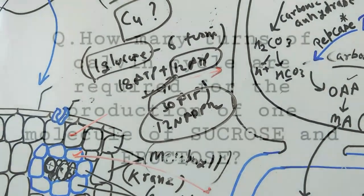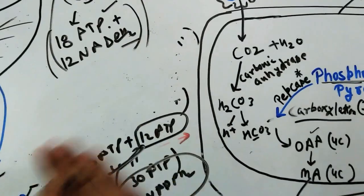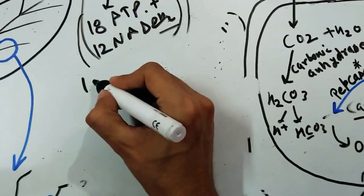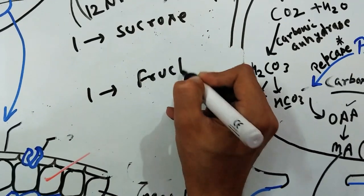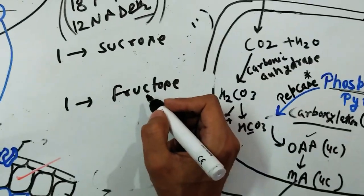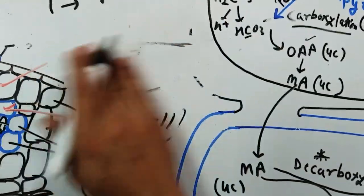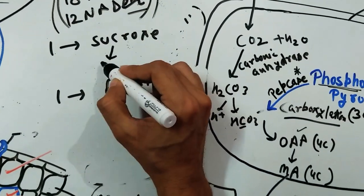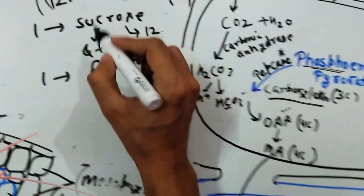The second question asks: how many turns of the Calvin cycle are required for the production of one molecule of sucrose and one molecule of fructose? We know that to form one molecule of glucose, 6 turns of the Calvin cycle are needed. Sucrose is made of glucose plus fructose. So to make both a glucose and a fructose molecule, we need a total of 12 turns of the Calvin cycle.